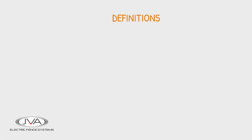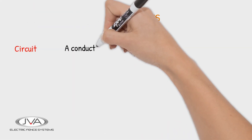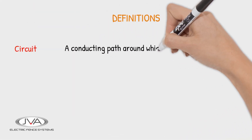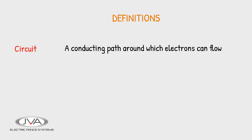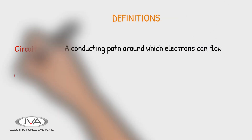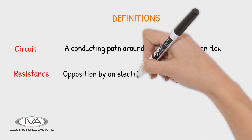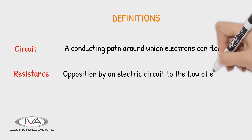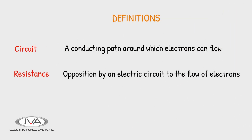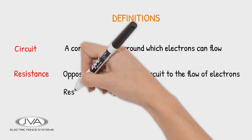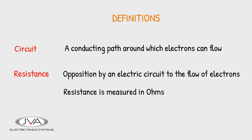In this video, we need to know that a circuit is a conducting path around which electrons can flow, and resistance is the opposition by an electric circuit to the flow of electrons. Resistance is measured in ohms.